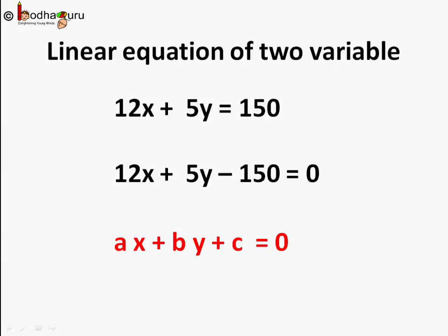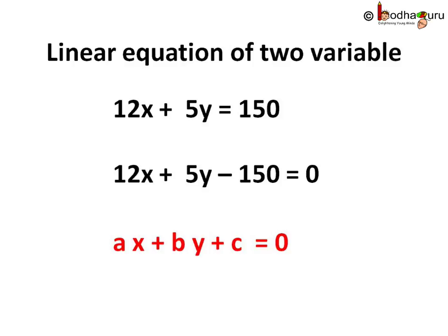The generic form of linear equation of two variables is AX plus BY plus C equal to 0. Like in this example 12X plus 5Y minus 150 equal to 0, A is equal to 12, B is equal to 5 and C equal to minus 150. And what we saw, a linear equation of two variables have infinite solutions as represented by the different points of the straight line drawn to represent the equation.